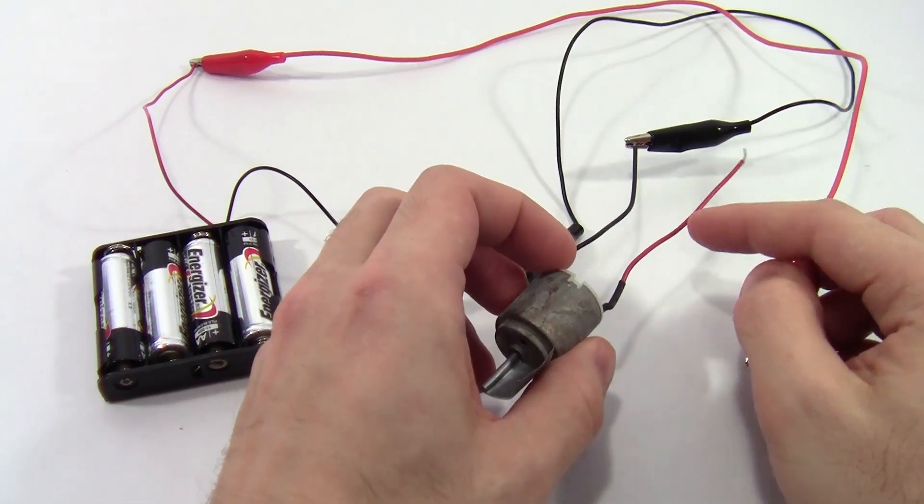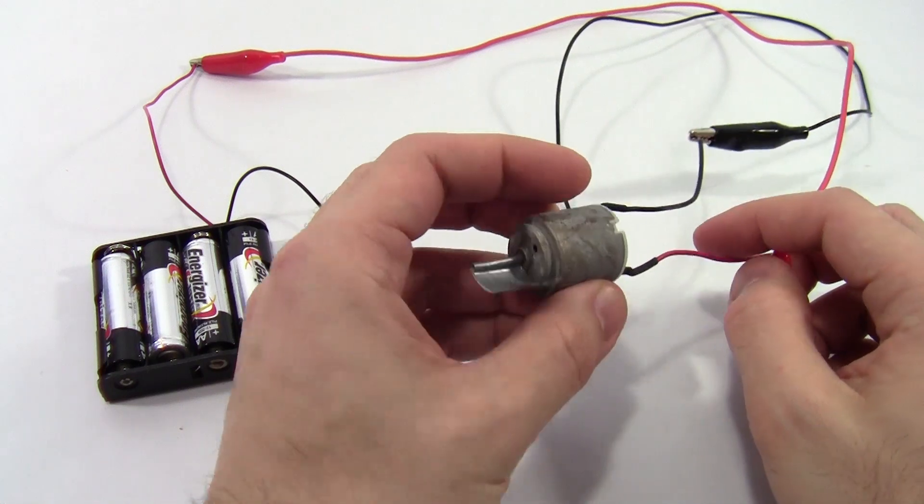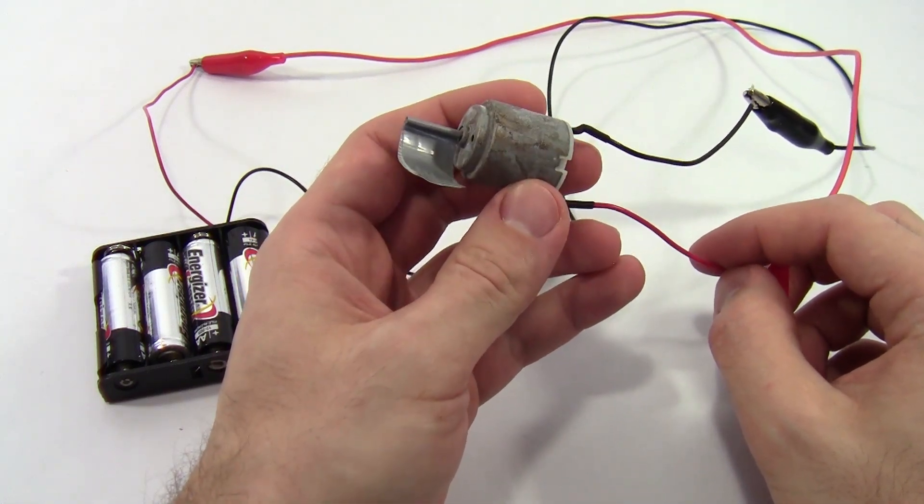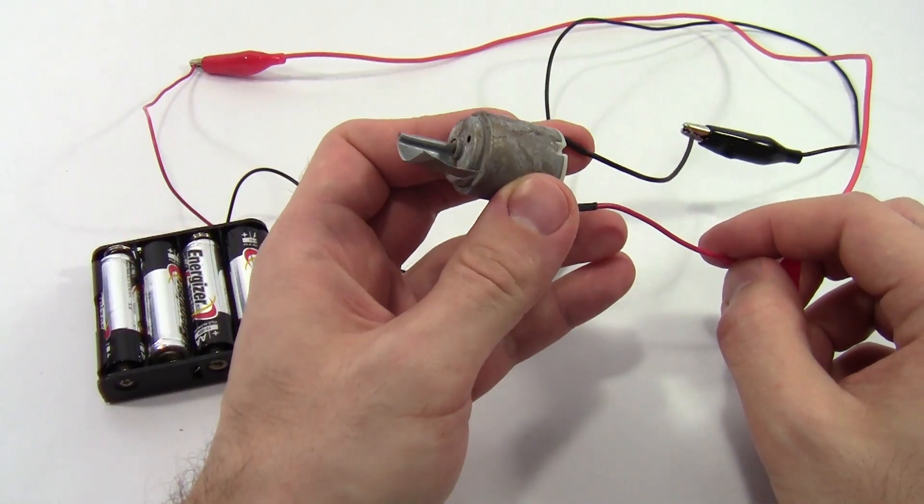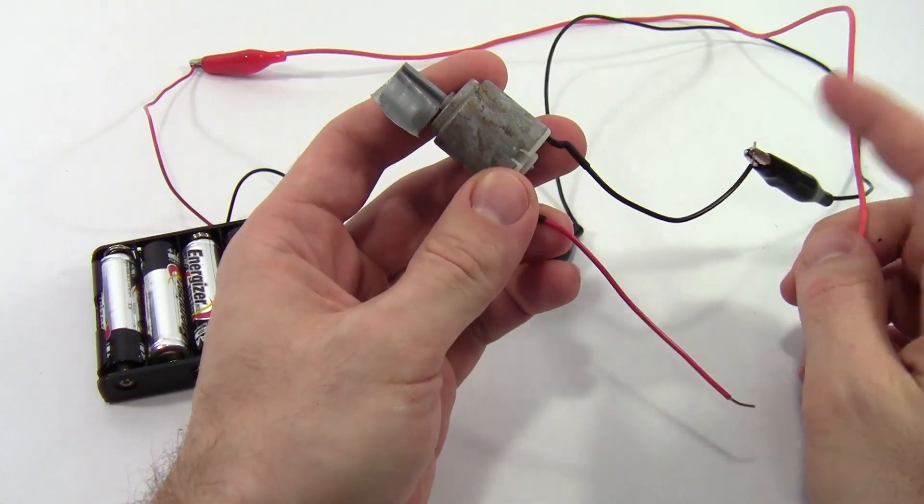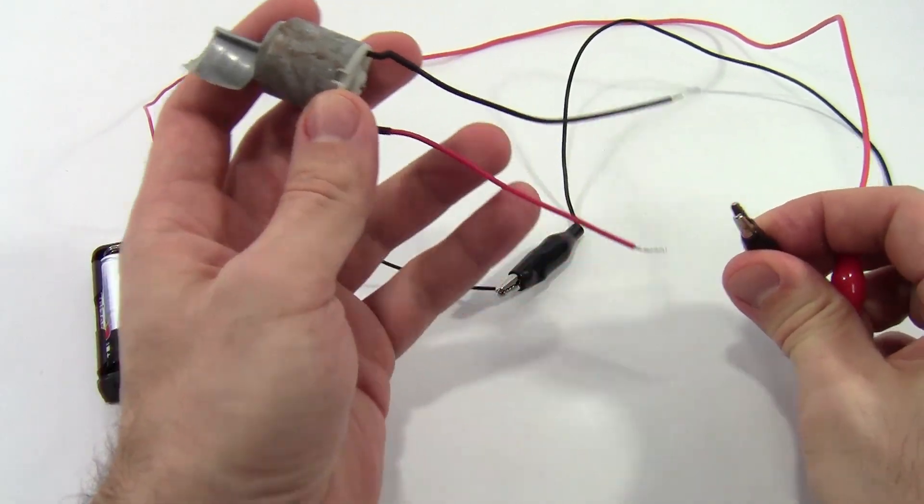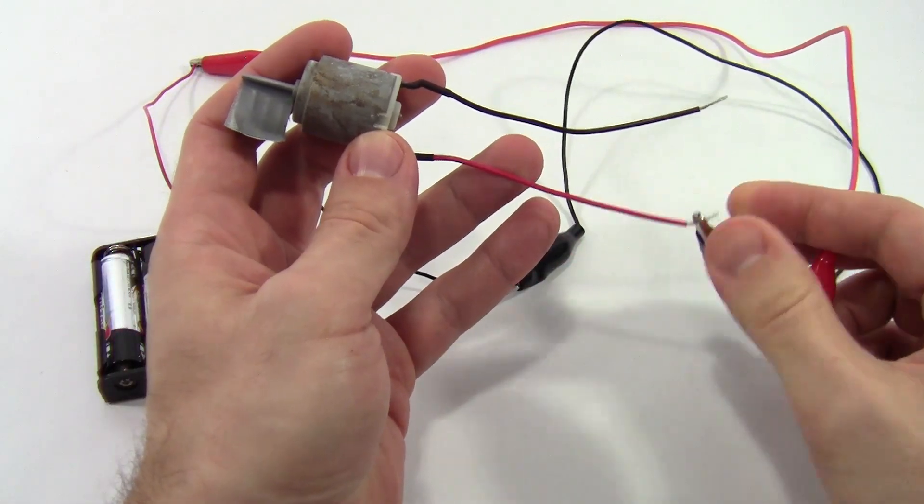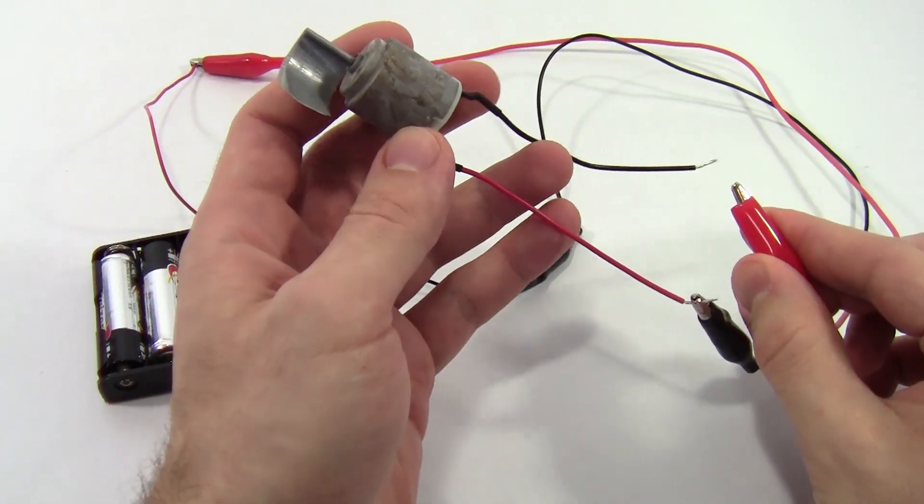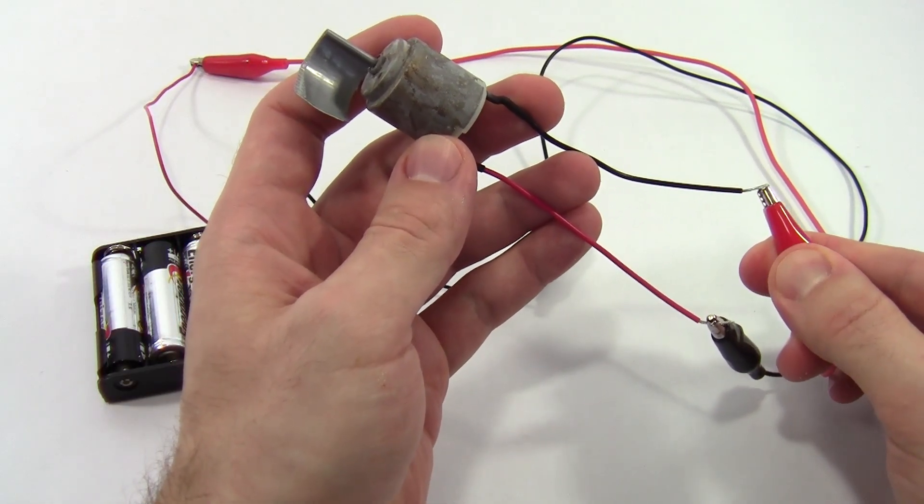And you might think, okay, I have red to red and black to black. I need to make sure those colors match up. If you've done anything with circuits using LEDs, you know that polarity or the direction of those connections matters. In the case of a DC motor, you're actually lucky. If I switch these wires and I connect black to red and red to black, it still works. It just reverses the direction that the motor spins. So in the case of the simple DC motor, you don't actually need to worry about that.